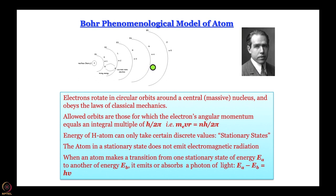When an electron jumps from one allowed orbit to another allowed orbit, the energy difference between these two orbits is either emitted or absorbed depending on the relative energies of the orbits. These were given a name by Bohr — they were called stationary states. It is important to understand this term because it is used even now in the most modern approach of quantum mechanics. When we say stationary states, we do not mean that the electron is stationary — according to the Bohr model it is moving in circles. What we mean is that the energy does not change. Stationary as far as energy is concerned, not as far as position is concerned.